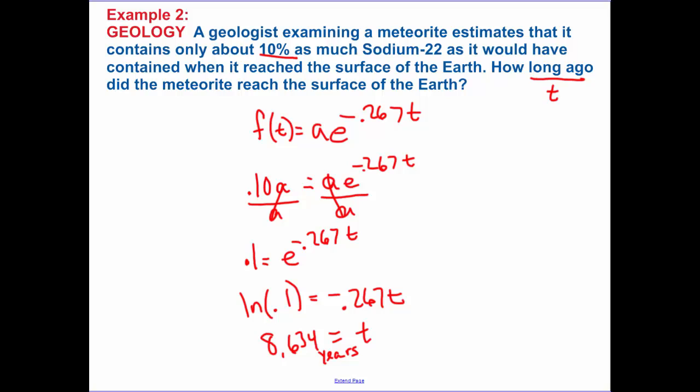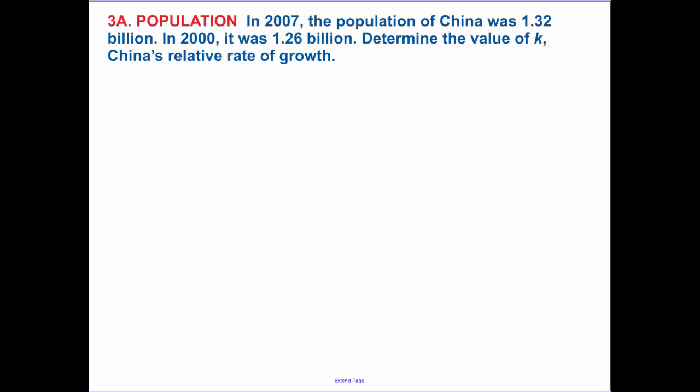So it's using the past equation in this example. In 2007, the population of China was 1.32 billion. In 2000, it was 1.26 billion. Determine the value of k and China's relative rate of growth. So let's make t equaling 0 be 2000. So then t equals 7 is going to be 2007. They tell me this is my initial amount.